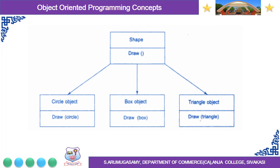This diagram shows function overloading. The shape is the parent class and it contains three children classes: circle, box, and triangle. All the classes contain a common method named draw.